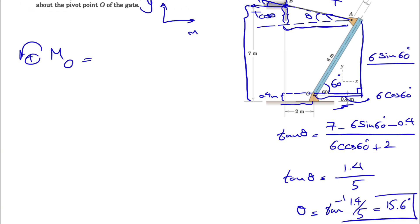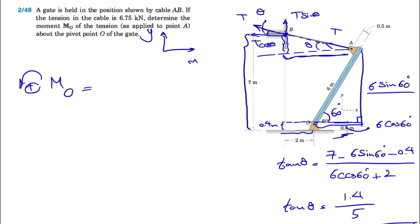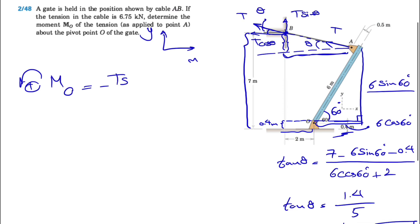Now we get to find the moment now that we have the angle theta. We have the moment of T sine theta, which will be a clockwise moment, so negative T sine 15.6 degrees, and the distance for that would be 2 meters.